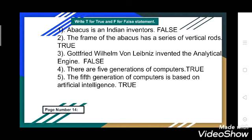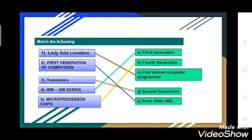Now the next exercise: match the following. Lady Ada Lovelace matches with C — first woman computer programmer. First generation computers matches with E — from 1940 to 1956. Transistors match with second generation; first generation used vacuum tubes which were then replaced by transistors. IBM 360 series belongs to third generation. Microprocessor chips are used in fourth generation.